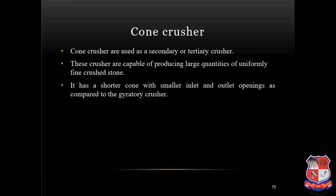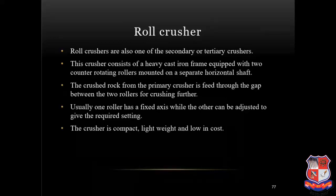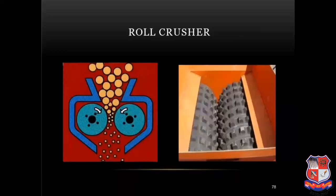Cone crushers are used as secondary or tertiary crushers. They are capable of producing large quantities of uniformly fine crushed stone. They have a shorter cone with smaller inlet and outlet openings as compared to gyratory crushers. Roll crushers are also secondary or tertiary crushers. A roll crusher consists of a heavy cast iron frame equipped with two counter-rotating rollers mounted on separate horizontal shafts. Crushed rock from the primary crusher is fed through the gap between the two rollers for further crushing. Usually one roller has a fixed axis while the other can be adjusted to give the required setting. The crusher is compact, lightweight and low in cost.